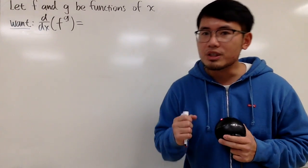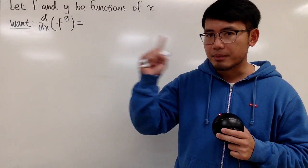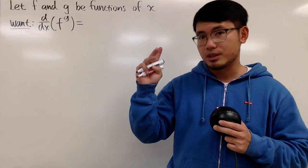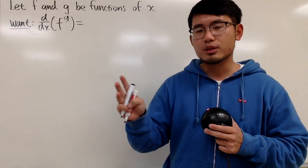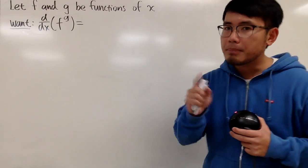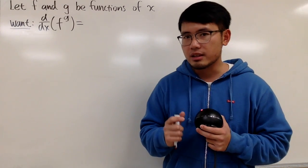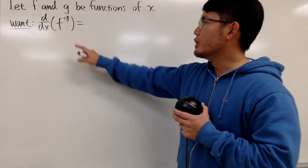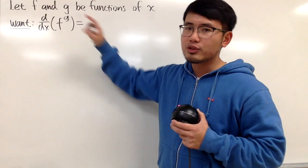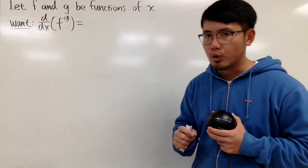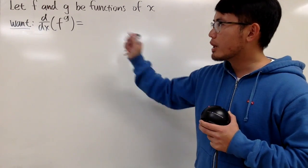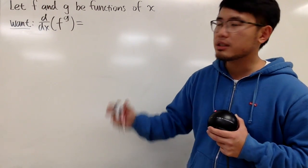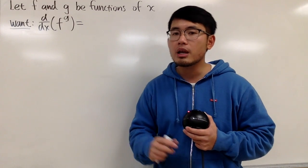As we all know, when we differentiate, we have the power rule, the product rule, the quotient rule, and we also have the chain rule. But we also have another special situation when we have a function to a function power. This right here is not a power-root situation, and this right here is not an exponential situation.